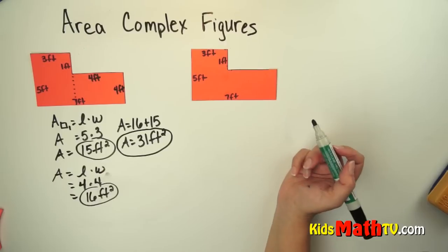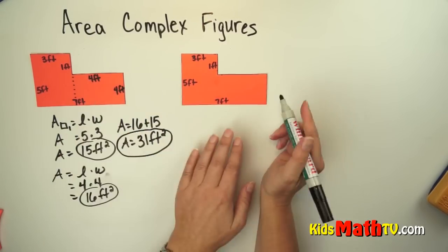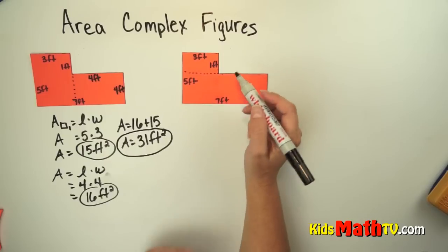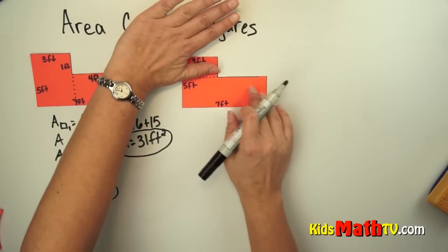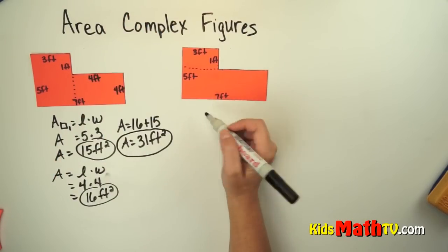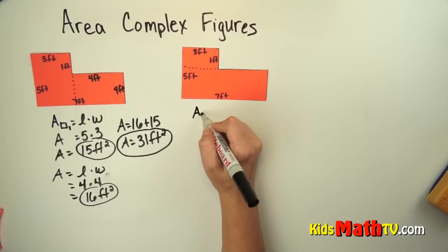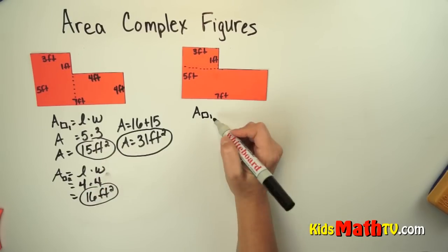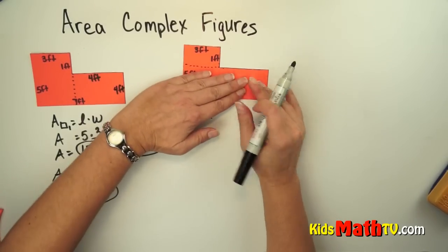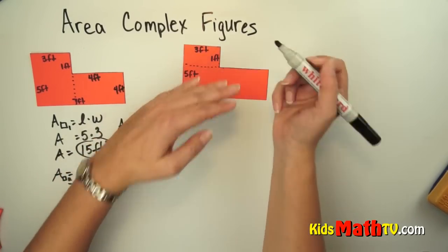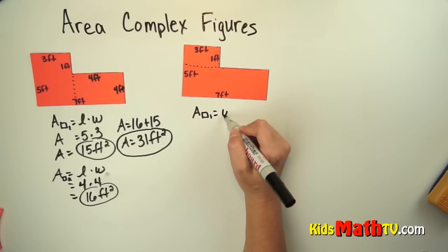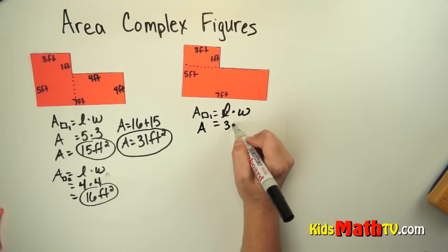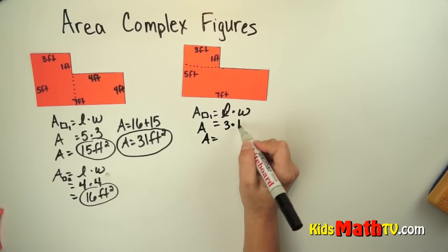I can do that problem a different way. It is the same figure, but this time I might want to split my figure differently. I am going to find the area of this rectangle and then the area of this rectangle and add them together. The area of the first rectangle — this one is already labeled for me: it is 3 feet and 1 foot. We do the length times the width, so area equals 3 times 1, which is 3.